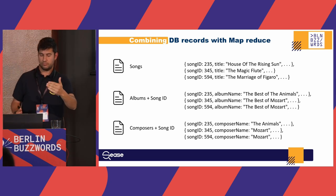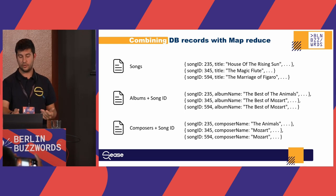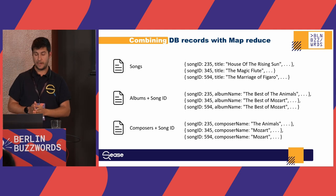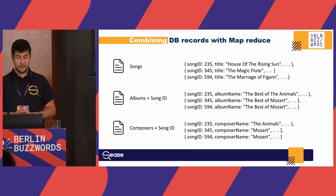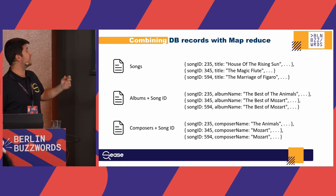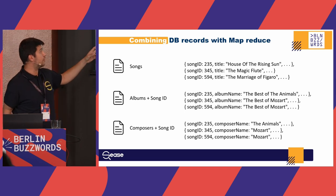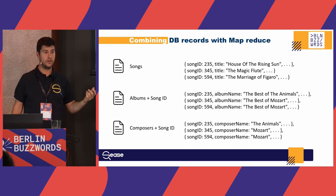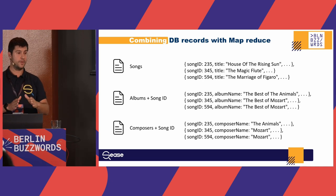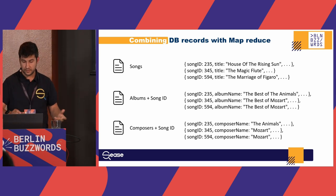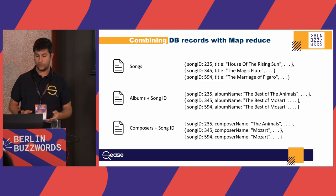We have a file for songs with all song information — title, description, BPM — and the song ID. Same story for albums and composers. One note: if an album contains multiple songs — for example 'Best of Mozart' contains two songs in this example — we replicate the album information twice, once for each song. Each piece of information should be assigned to a single final document: one for document 345, the other for document 594.